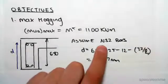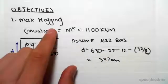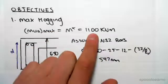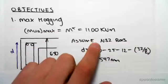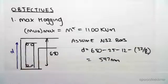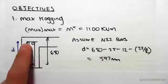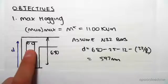What we're going to be doing then is we need to assume a bar size. Because we're doing maximum hogging and the moments are huge, 1100 kilonewton meters, we're going to assume a big bar size, so we're assuming N32 bars.